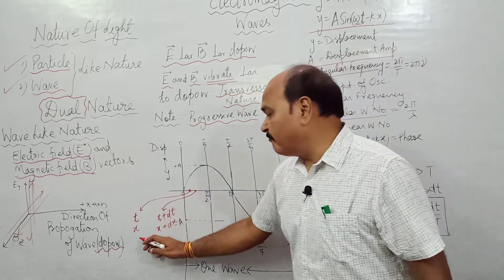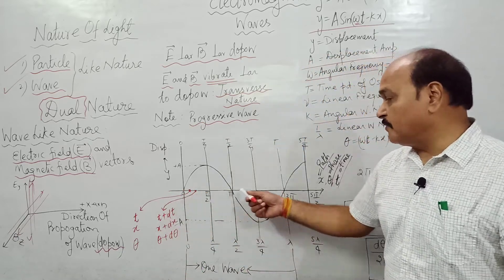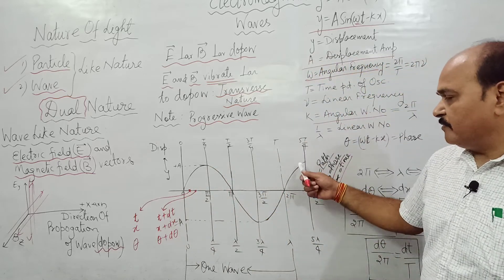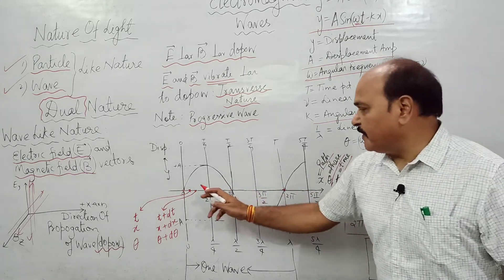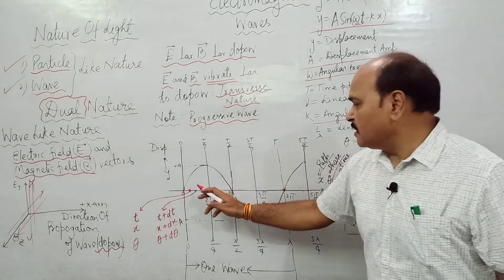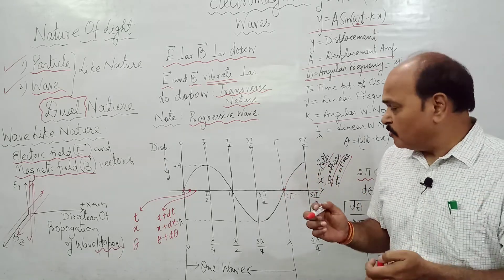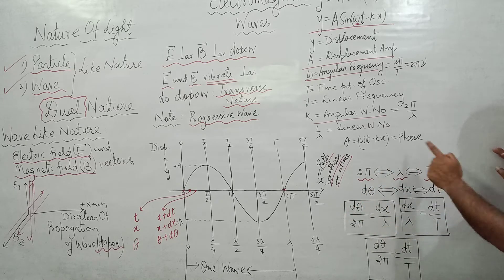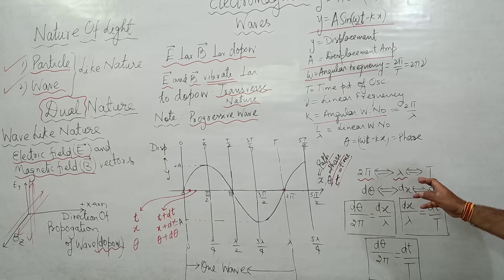If at one point the phase is θ, then at the next point the phase is θ + dθ, where dθ is the phase difference between those two points. Looking at one complete wave: the path difference between the two endpoints is λ, the phase difference is 2π − 0 = 2π, and the time difference is T − 0 = T. These three are entirely different quantities but they correspond to each other: 2π phase difference corresponds to λ path difference, and λ path difference corresponds to T time difference.